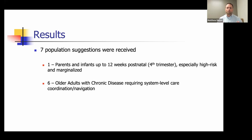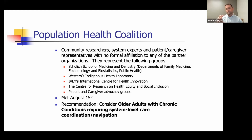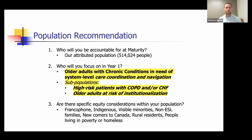One suggestion — parents of infants in early phases of life — was distinct, and we supported that group to connect with another OHT developing around pediatrics. The other six populations were variations of: COPD, CHF, people needing support transitioning across care, and people at risk of institutionalization. When we got all six groups together in a room with facilitators, they acknowledged they were really talking about the same people — that was a really powerful exercise. The recommendation to our Coordinating Council was that our year one priority population should be older adults with chronic conditions in need of system-level care coordination and navigation.